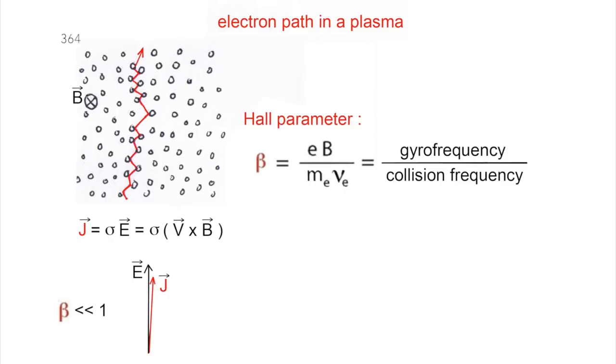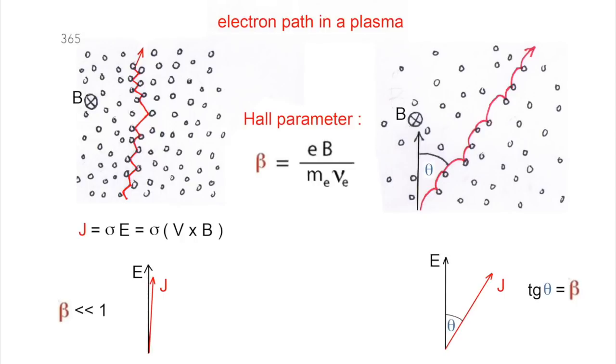For the same value of the magnetic field, if the density of the gas is lower, it increases the mean free path. So, the curvature of the electron path goes with a drift movement.